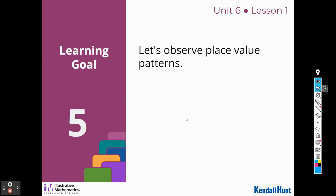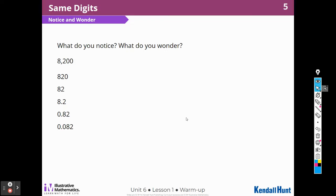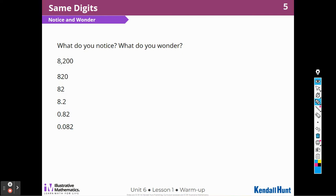We're going to observe place value patterns. What do you notice? What do you wonder? Well, the first thing I notice is that each one of these numbers has the digit 8. Each one has 8, and it has the digit 2. But I also notice that they're not all the same value. Those digits are in different places, which make them different values.